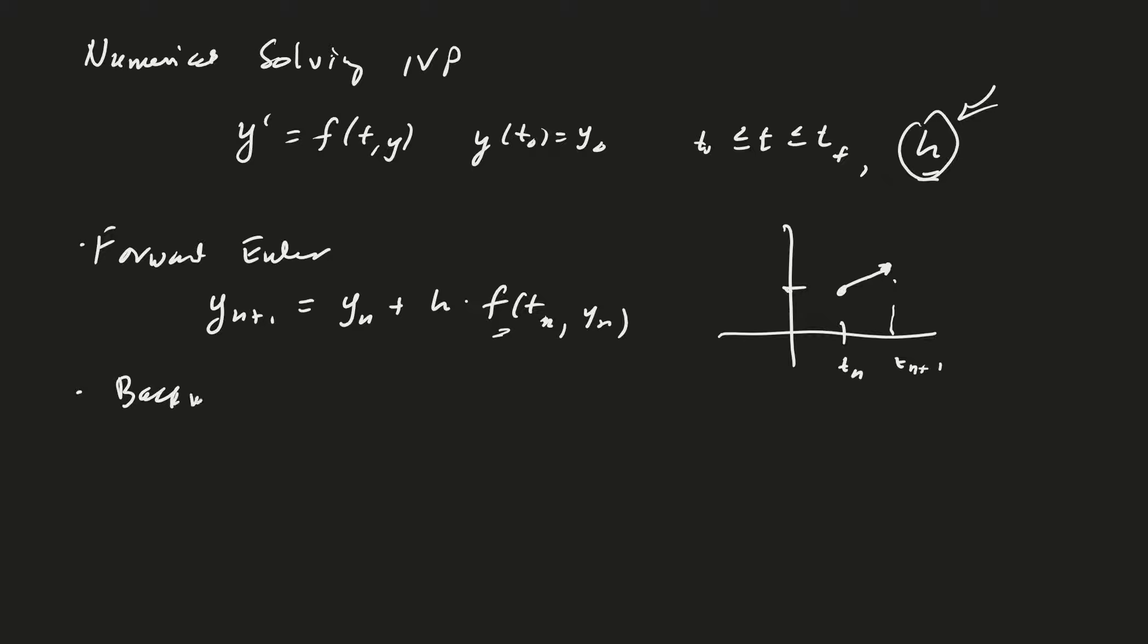Backward Euler is a little different. It has two versions - the implicit version and the estimated version. When we code this, we'll use the estimated version because the implicit version requires you to solve an equation.